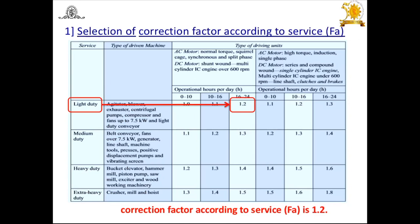Now in the first step, we select the correction factor for the service. In this problem, the driven machine is a light-duty compressor driven by a normal torque motor, running 16 to 24 hours per day. From the service condition table, for a light-duty compressor with a normal torque motor operating 24 hours per day, the correction factor FA = 1.2.